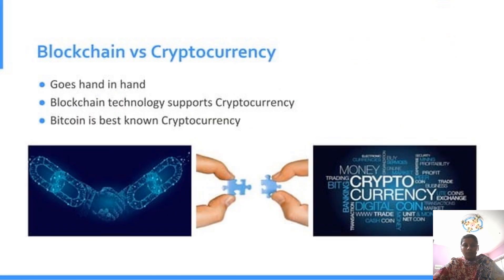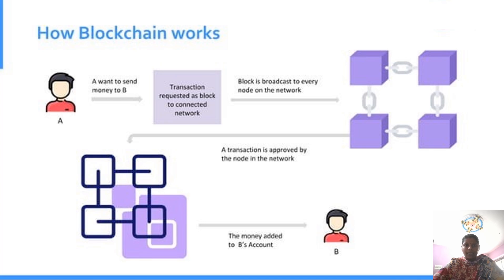Let us see the difference between blockchain and cryptocurrency. They go hand in hand. Blockchain technology is supporting the cryptocurrency — Bitcoin is the best known example for cryptocurrency.